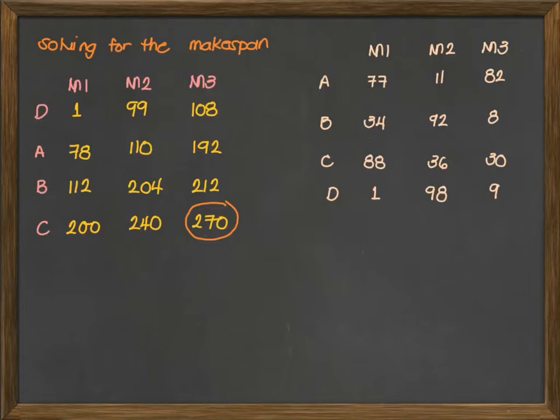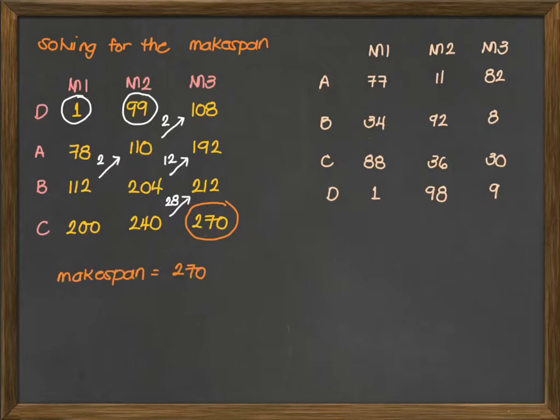Therefore, the span time or the makespan of this job sequence is 270. And for the idle time, we choose the first two numbers, that's 1 and 99. And then scanning for the diagonal values, we have 112 and 110. So the idle time here is 2. Then we also have 110 and 108 on the other column, that's also 2. Then 204 and 192 is 12. And lastly, 240 and 212, that's 28. So in conclusion, your makespan is 270 units. Your idle time is 1 plus 99 plus 2 plus 2 plus 12 plus 28. That gives us a total of 144 units for our idle time.